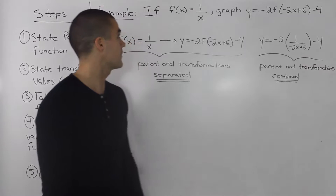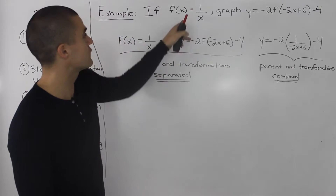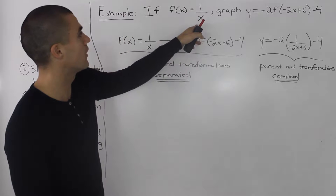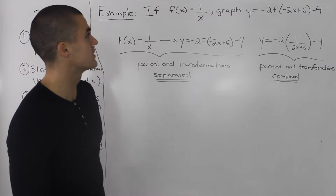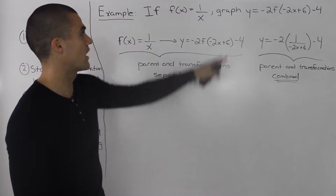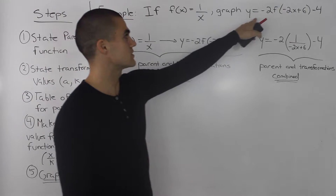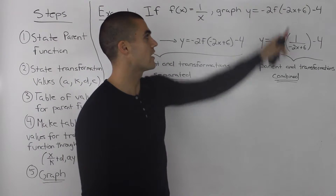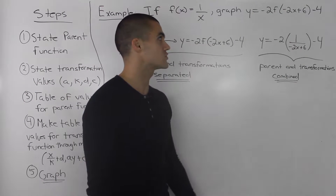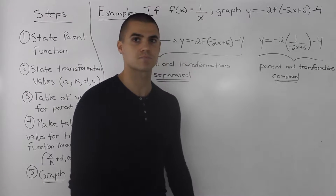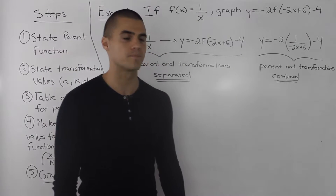Moving on to our next example, if f of x is equal to 1 over x, we have to graph y is equal to negative 2 f of negative 2x plus 6 minus 4.